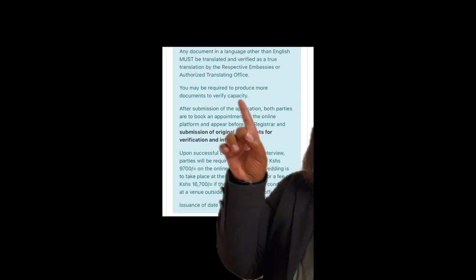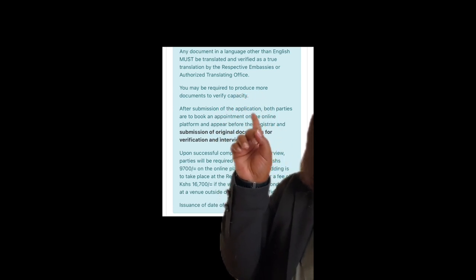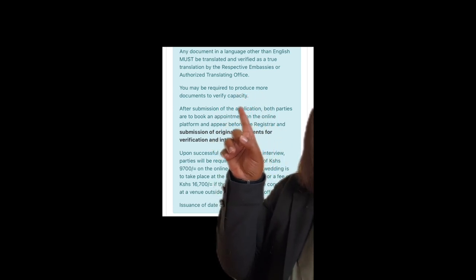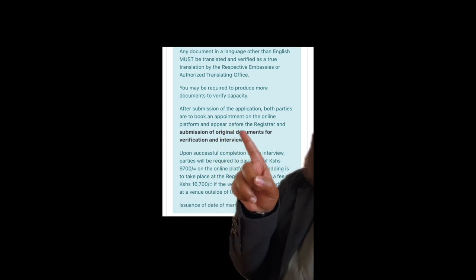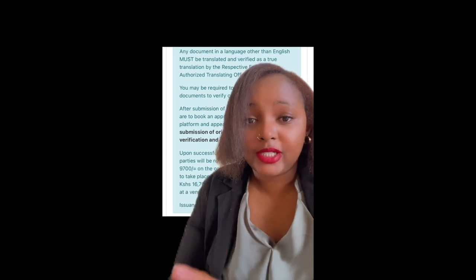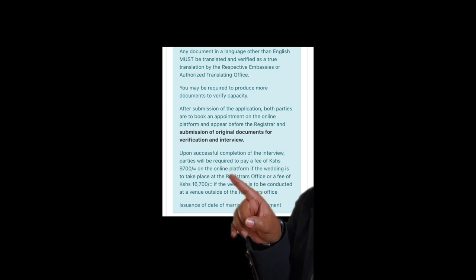Any document that is not in English will need to be translated and verified. You may also be required to produce more documents to verify capacity as a safety measure. After you submit the application, both parties book an appointment on the online platform and appear before the registrar for submission of original documents, verification, and interview. You have to go to the Office of the AG and be interviewed — just cooperate and give them whatever documents they want.